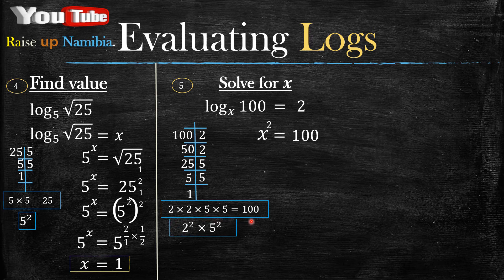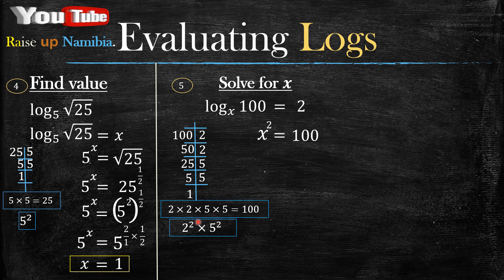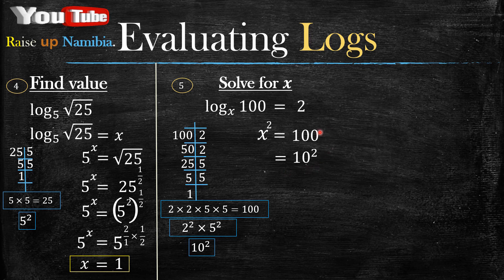So 2 times 2 times 5 times 5 is 100. In exponential form that's 2 squared times 5 squared, because 2 is multiplied by itself twice and 5 is multiplied by itself twice. Since both exponents are 2, we can multiply the bases: 2 times 5 gives us 10, and the exponent stays the same. So 100 is replaced with 10 squared — and indeed 10 squared equals 100, which you can verify on your calculator.